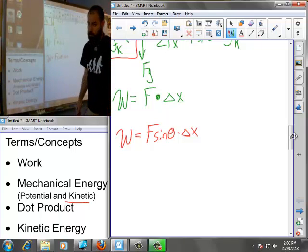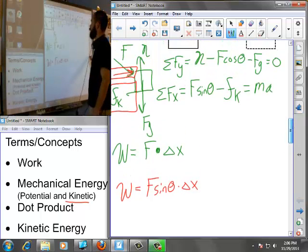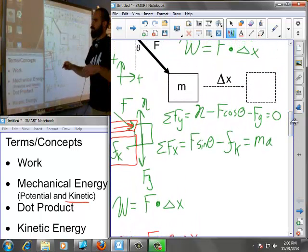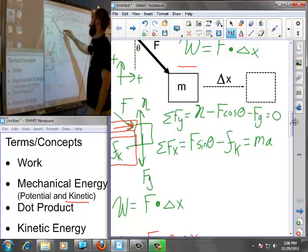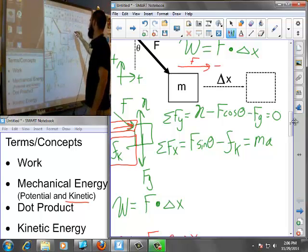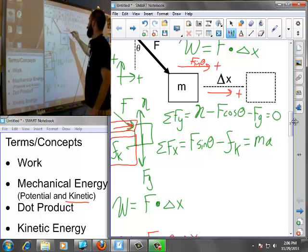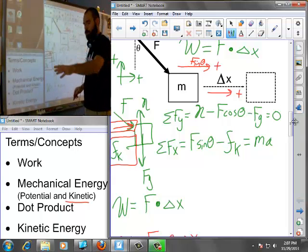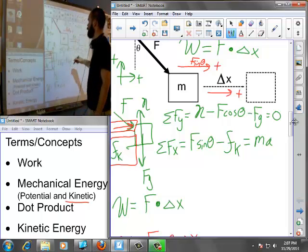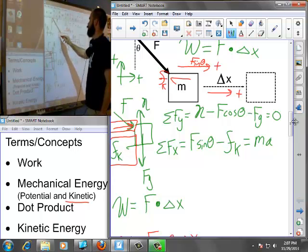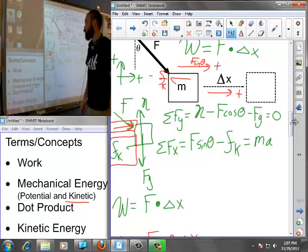Friction is taking energy from the system. We've already done the work by F sine theta multiplied by delta x. Friction must be working against that, reducing the amount of energy you're able to push into that book. Friction has a negative sign for the work done.